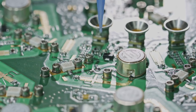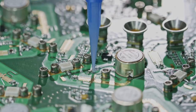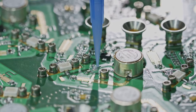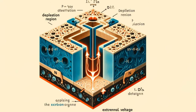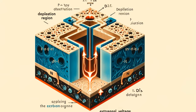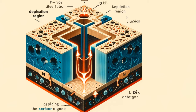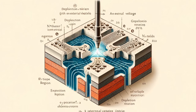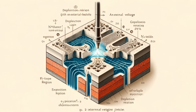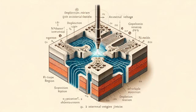The depletion region acts as a barrier to the flow of current. However, by applying an external voltage, we can control the width of the depletion region, and thus the flow of current through the P-N junction.